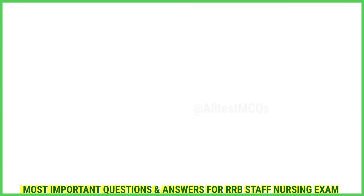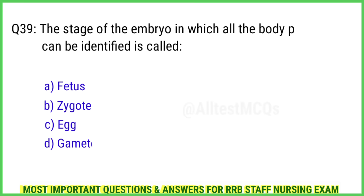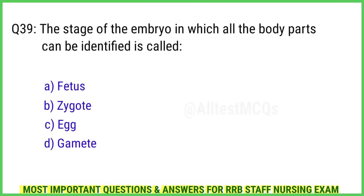Question 39. The stage of the embryo in which all the body parts can be identified is called? The right answer is Option A: Fetus.